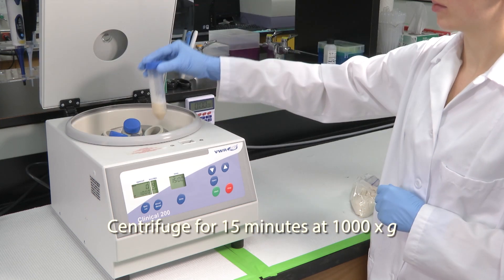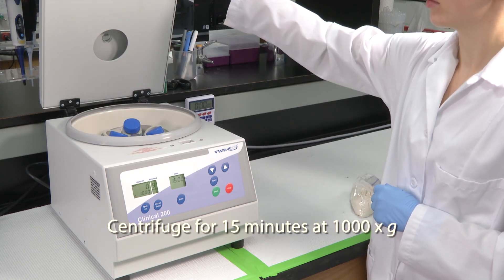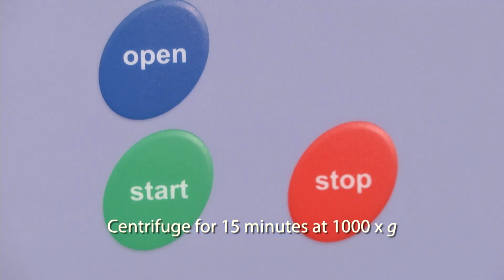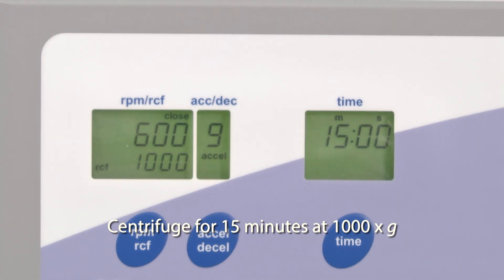Next, centrifuge for 15 minutes at 1000 times G. The extra tubes within the centrifuge are placed there for balance.